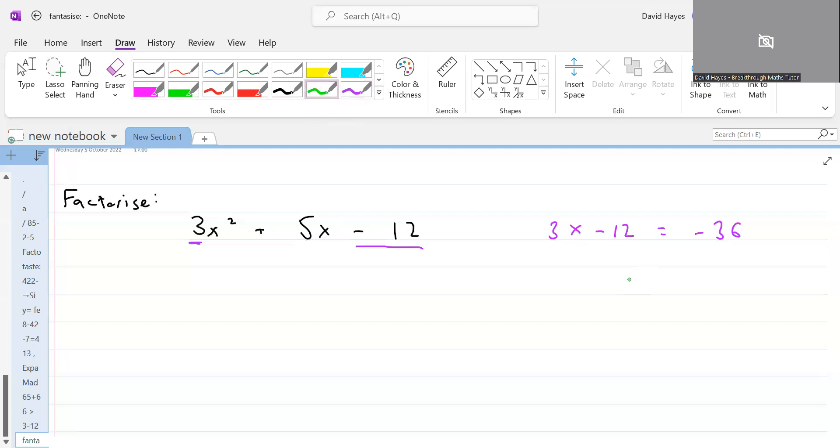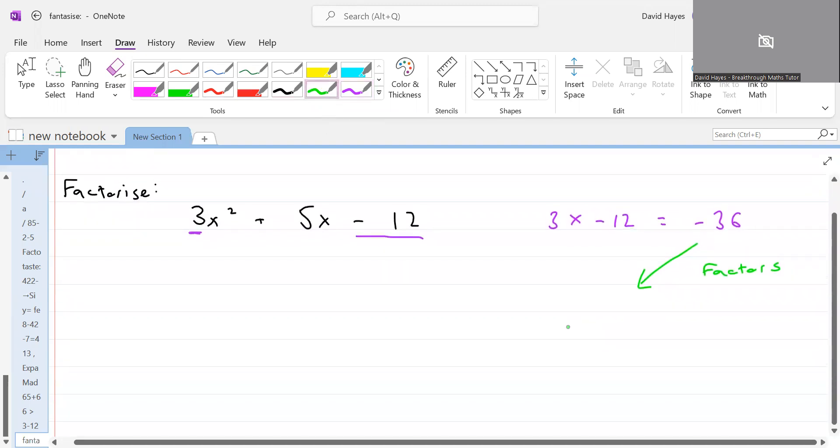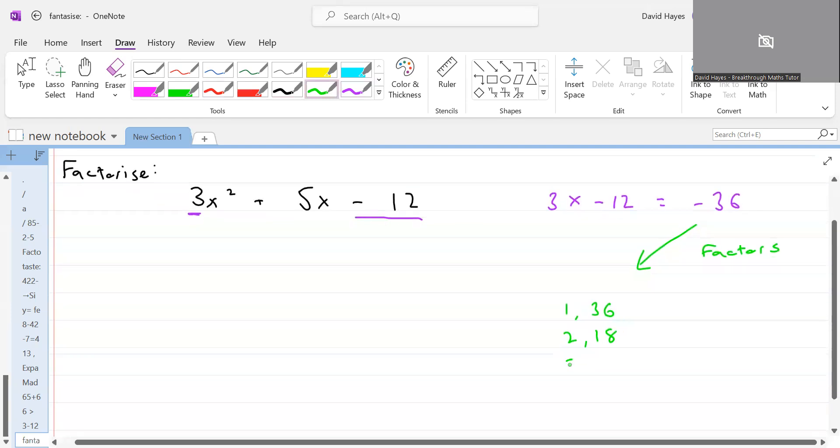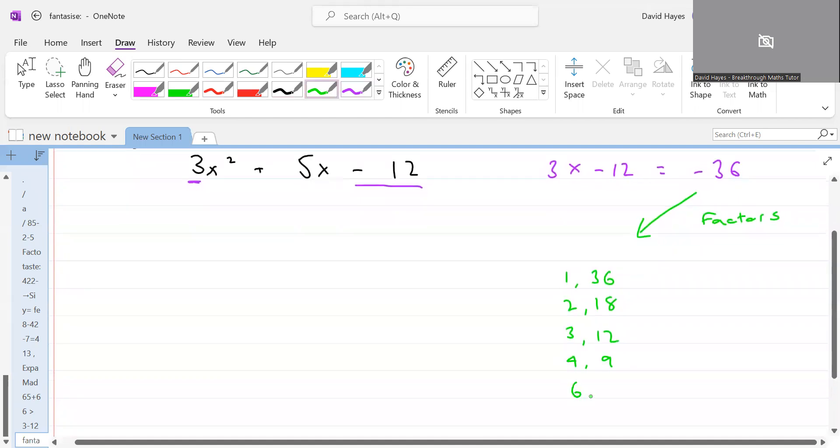Now I need to take this number 36 and I need to get the factors of that. So factors mean any two numbers that could be multiplied together to give minus 36. If I list out all the different factors of 36, I would have 1 and 36, 2 and 18, 3 and 12, 4 and 9, 6 and 6.